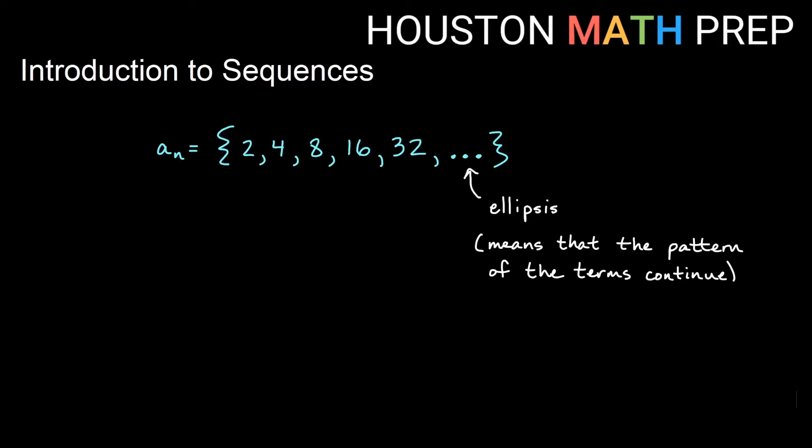You'll notice we have this ellipsis on the end. That simply means that the pattern that we've established with the terms already written in the list, then that pattern is going to continue from there on. If you can see, we start at 2 and go to 4 and 8 and 16 and 32. What that pattern is telling us is that we're doubling from one term to the next. We don't need to necessarily write out all of the terms, especially if we have many, many terms.